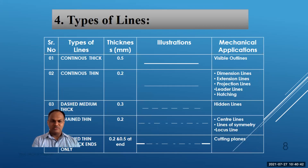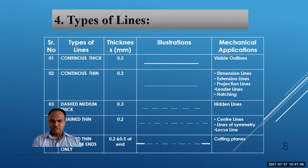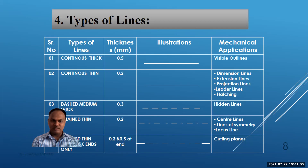Now we look at the types of lines used in actual practice. A continuous thick line has 0.5 mm thickness and is used for visible outlines. A continuous thin line has 0.2 mm thickness; we vary the thicknesses using the force on the stroke. Dimension lines, extension lines, projection lines, leader lines, and hatching lines should all be fine, with 0.2 mm thickness.